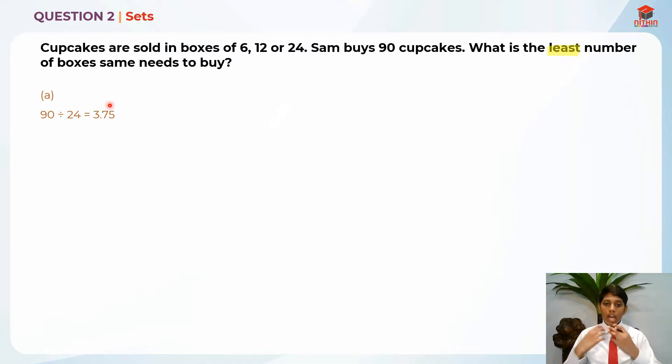We are going to see how many boxes can be created with the largest number of cupcakes sold in one box. So we take 90 divided by 24 which gives us 3.75.